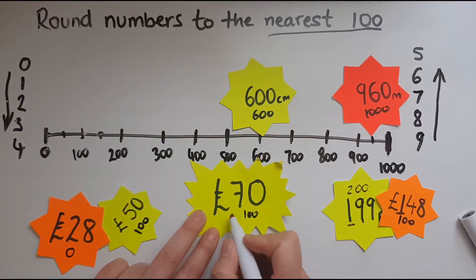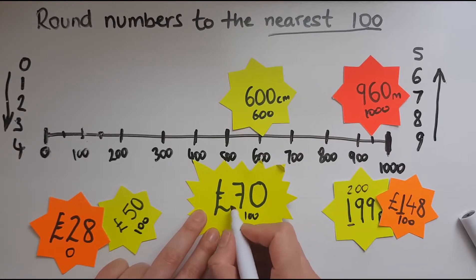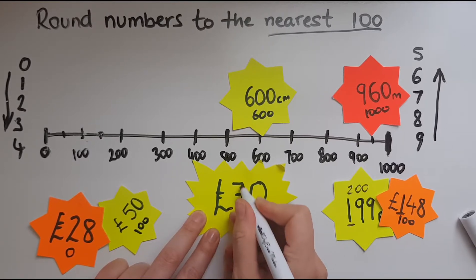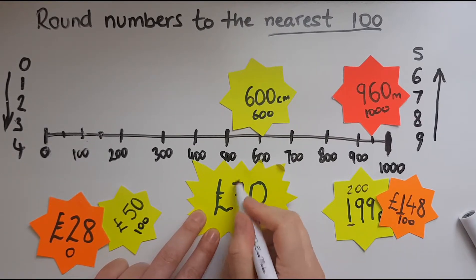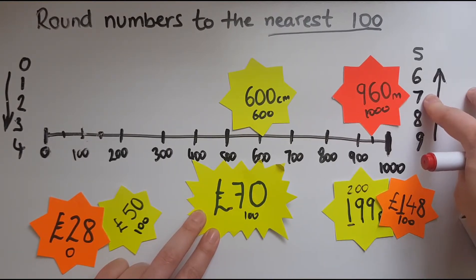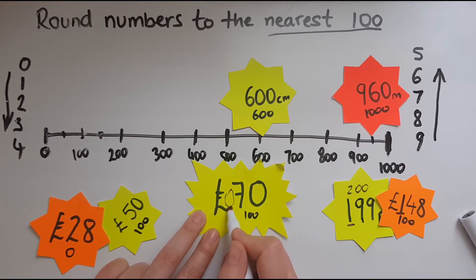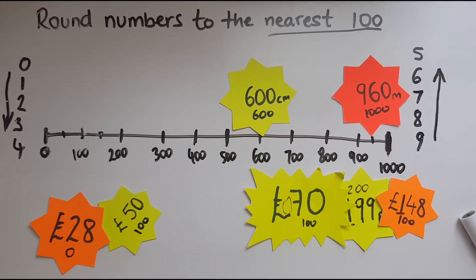So we've got 70. Obviously we haven't got a digit that represents the hundreds — that would be over here. So we look at the digit next to it on the right, which happens to be seven. Seven is one of the digits that means we round up. So we go up to 100, because the hundreds digit is currently zero — and seven tells us we need to round up, so we get 100.